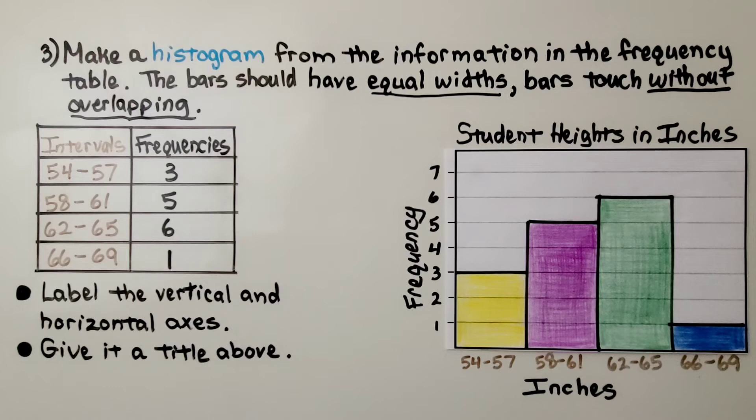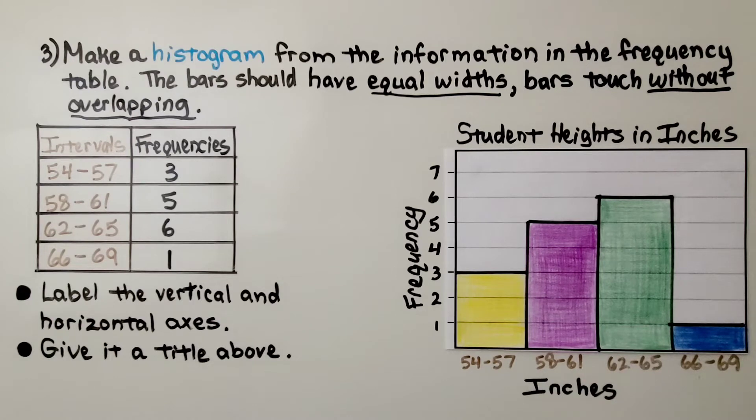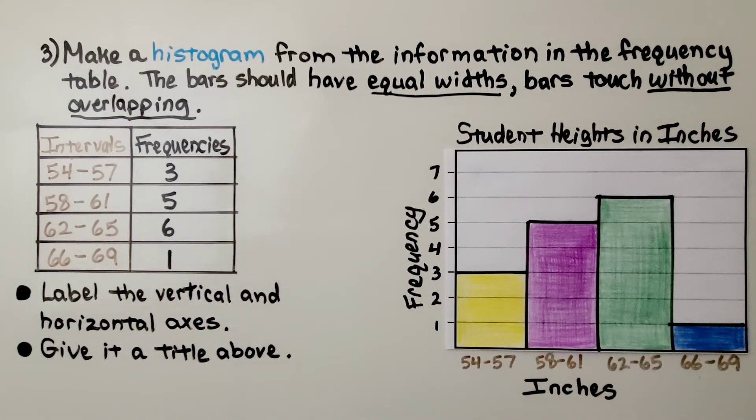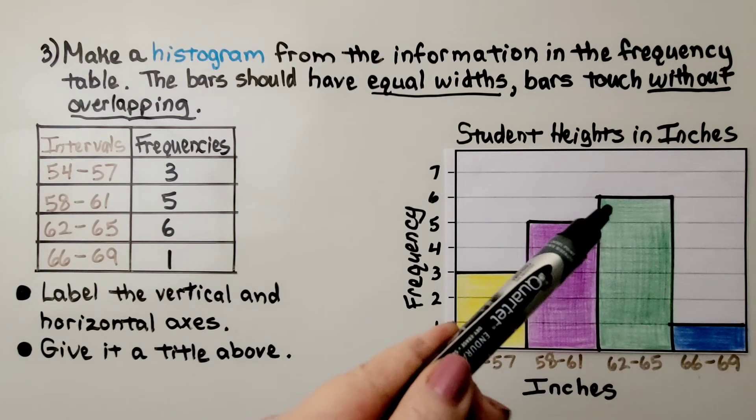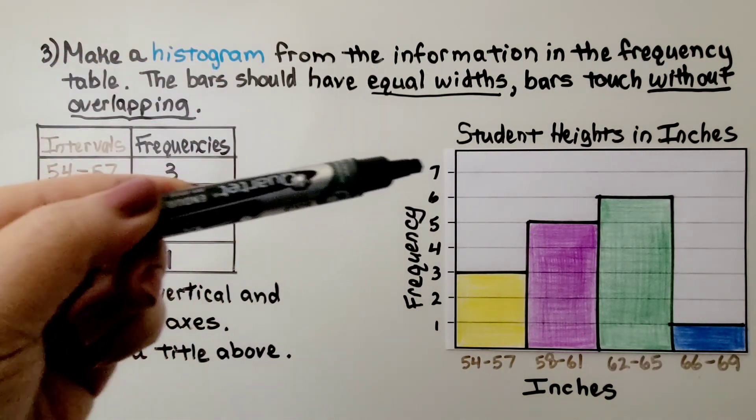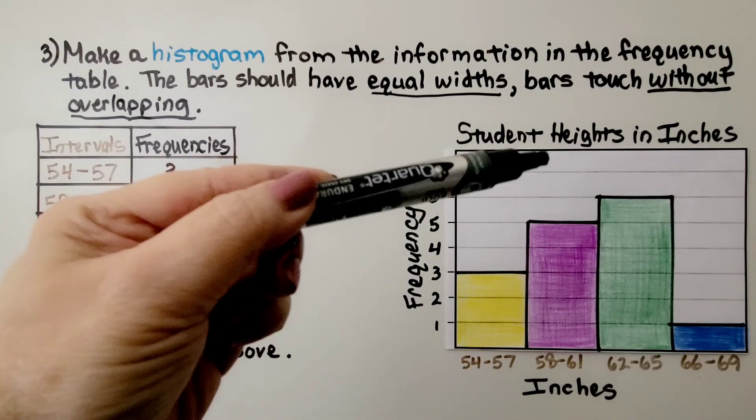We have our frequency table and histogram from the data in the frequency table. Now what would happen to our histogram if 3 new students joined the class that were between 62 and 65 inches tall? 3 new students in this height range joined the class. It would go up in height. So we need a taller histogram. Then we could show a frequency of 9. If there's 6 now and we had 3 more, our histogram would have to go up to 9 or 10. You don't want the top of the histogram to be touching the highest bar. You want at least one space there.